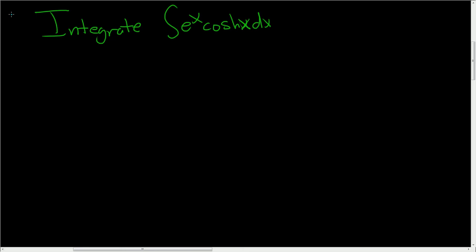So we're looking for the most general antiderivative of e to the x times the hyperbolic cosine of x, so a solution. It may be tempting to try something like integration by parts here, but that's a bad idea.